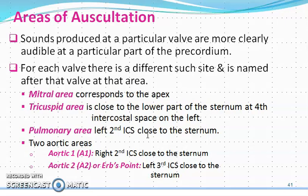First of all, you know that the heart has four valves. Broadly we are dividing the heart into two parts: first is the atrioventricular valve and second is the semilunar valve. In the atrioventricular valve, there is the mitral valve — also called the bicuspid valve — and the tricuspid valve. The tricuspid valve is between the right atrium and right ventricle, and the mitral valve is between the left atrium and left ventricle.